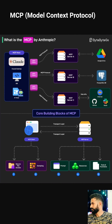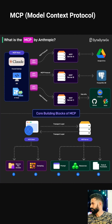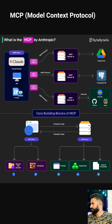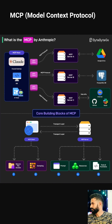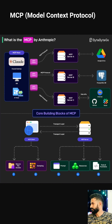Server A connects to Google Drive, allowing Claude to access and manipulate files. Server B connects to a PostgreSQL database, enabling Claude to retrieve and store data. Server C connects to web APIs, the internet, GitHub, and Slack, giving Claude access to a wide range of online services and tools.